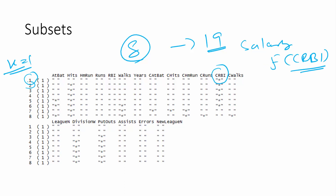When you have a two-variable model, you have many number of models. When k equals 2, you can see a star over 'Hits' and then 'CRBI'. So when you have a two-variable model, the best prediction is given by the function of CRBI and Hits.